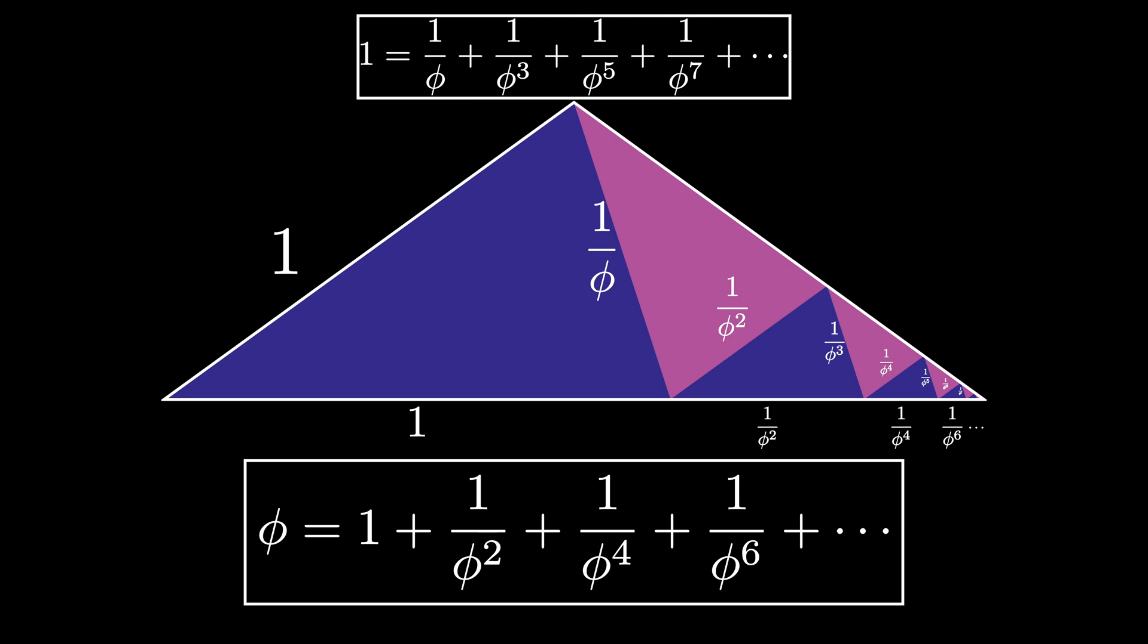Notice that these two facts are actually one and the same, as we can obtain the first fact from the second fact simply by multiplying the entire equality by the golden ratio phi.